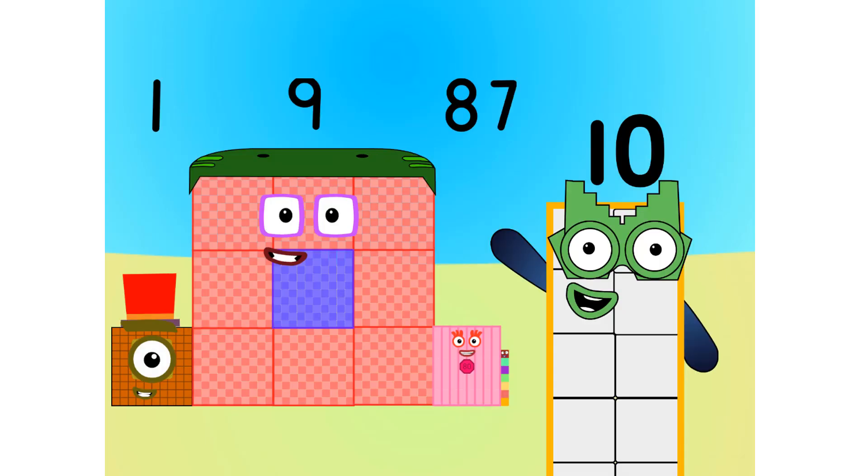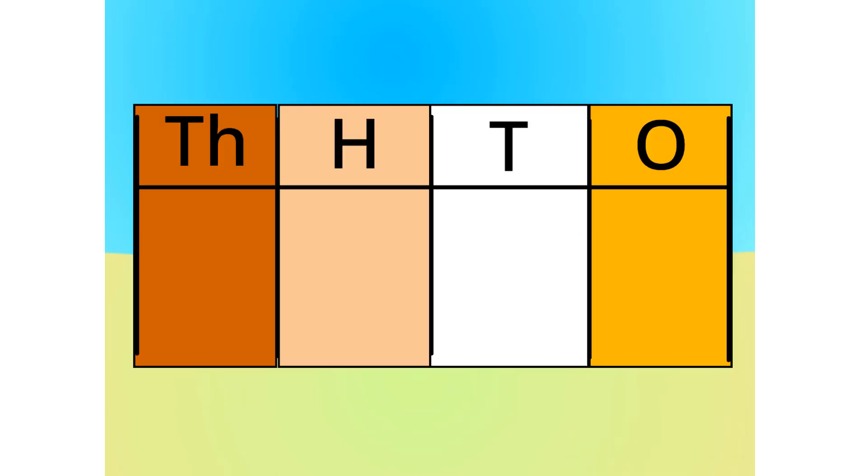As you can see, this number is 1 thousand, 9 hundreds, 8 tens, and 7 ones. Let me carry on with the first method. Do you notice anything with this table? Correct. The number multiplies by 10 each time it goes left one column. Because it multiplies by 10 each time, we call this system base 10.